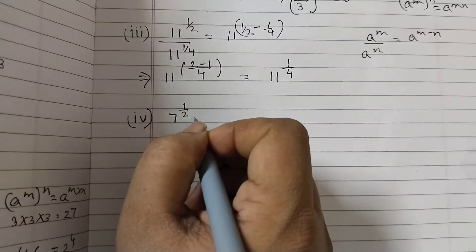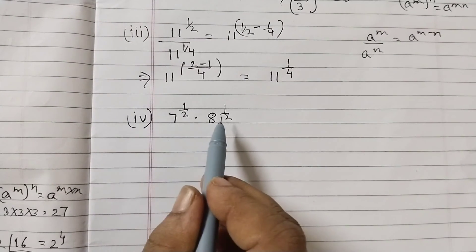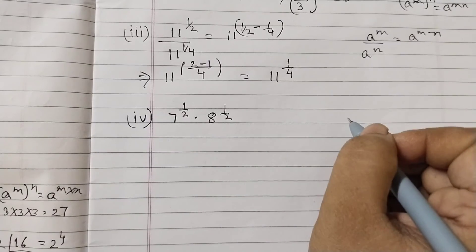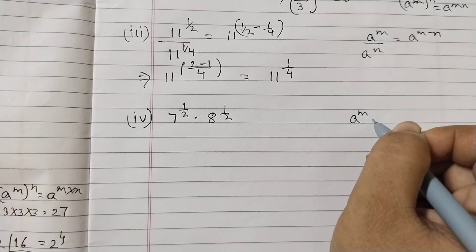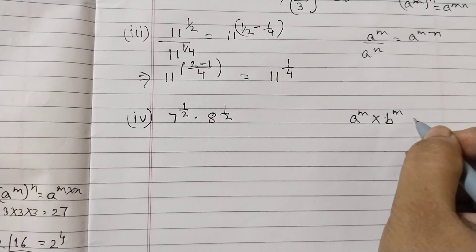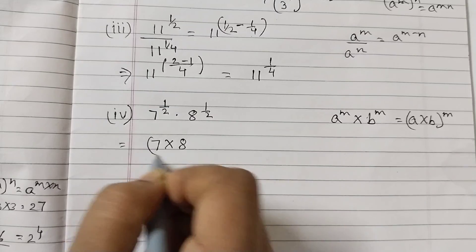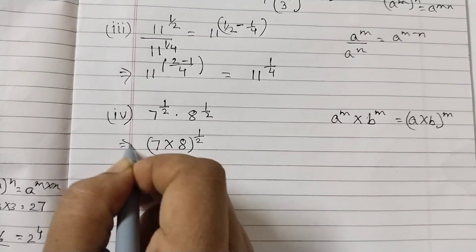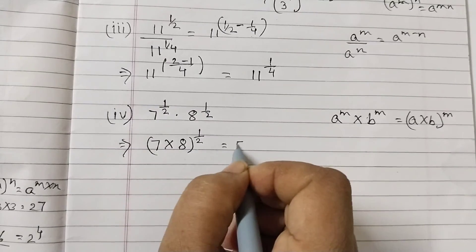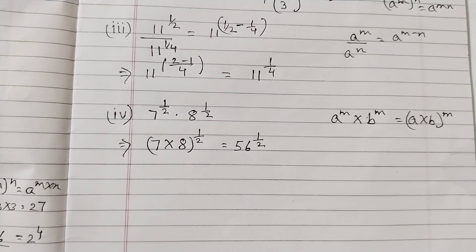Last part: 7^(1/2) multiplied by 8^(1/2). Here we have different bases but the same exponent. The law states: a^m × b^m = (a×b)^m. So this equals (7 × 8)^(1/2) = 56^(1/2). That's the answer for the last one. This was the last exercise of Chapter 1. There are many videos for Class 9 on this channel — please go through them, and if you like this video, do share with your friends. Thank you.